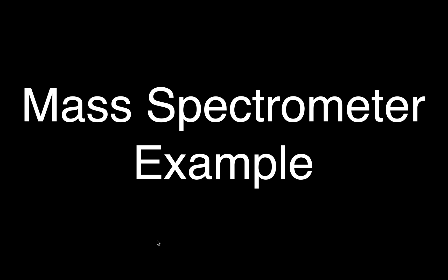In today's video, I am going to go over an example about how a mass spectrometer works and how we can use the mass spectrometer to determine the atomic masses for different isotopes of elements.